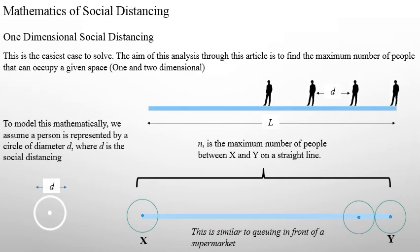What I have done is analyze this in a way which firstly is a one-dimensional social distancing in a mathematical way. So assume that for example you have one line like a queue in front of a supermarket, or maybe an office or a bank and so forth. What I did here, to simplify this analysis, I assumed that one person can be geometrically modeled as a circle of diameter D. This D is the social distancing, which currently is 2 meters in the UK.